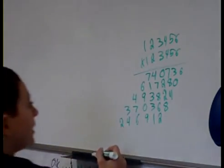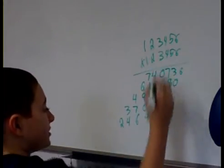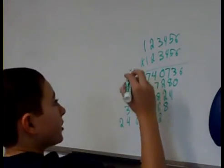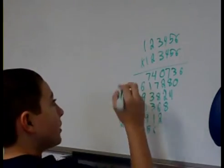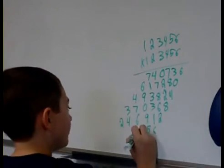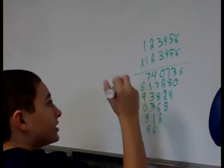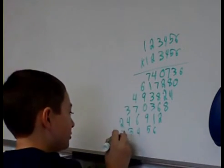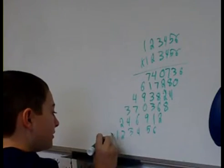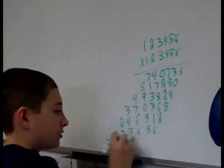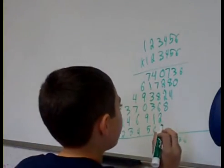Okay. And then, we move on to 1. 1 times 6 is 6. 1 times 5 is 5. 1 times 4 is 4. 1 times 3 is 3. 1 times 2 is 2. And 1 times 1 is 1. And then, you add all those up. Right?